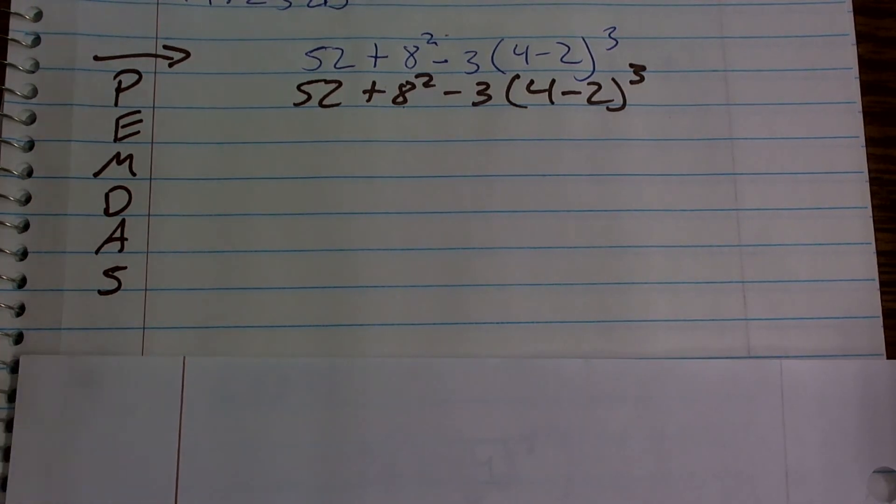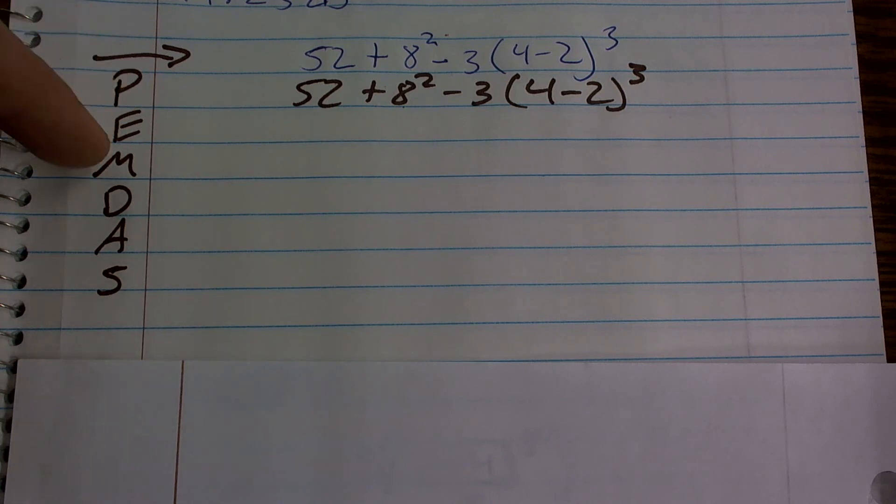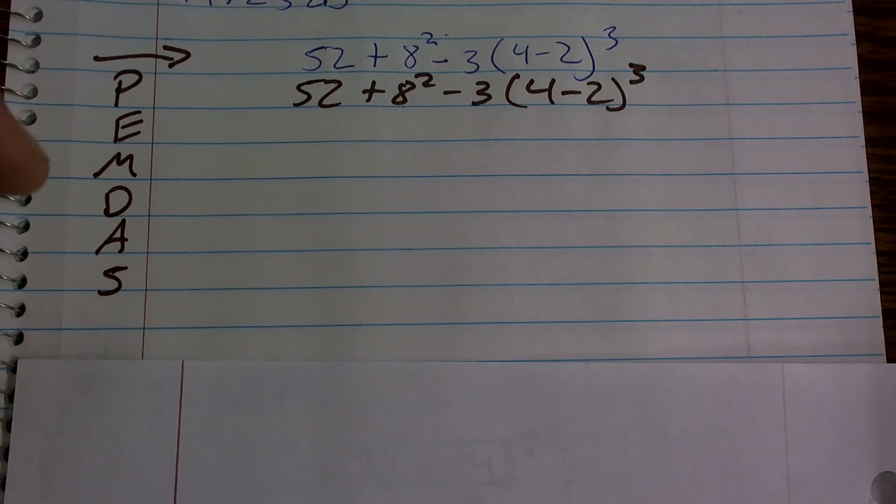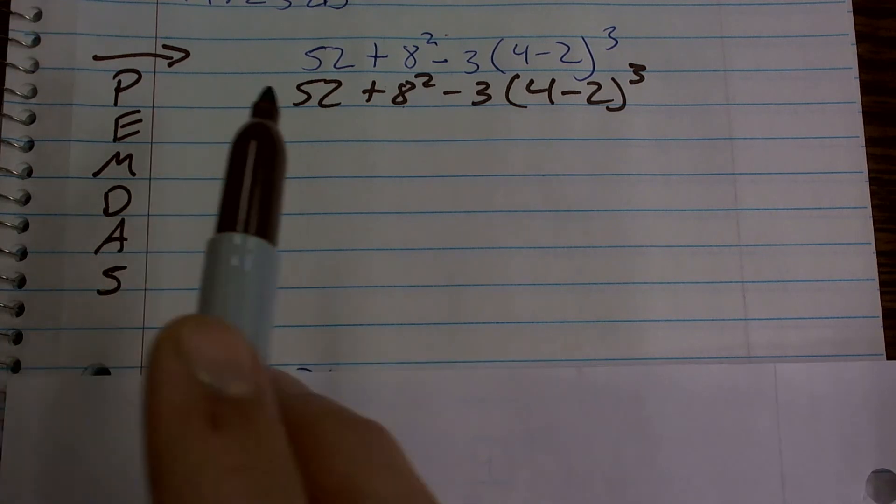So the first thing, and this is parentheses or grouping symbols, which would be G, but let's just do parentheses or grouping symbols, exponents or powers, multiplication and division from left to right, addition and subtraction from left to right. That's why I put the arrow to remind me to go left and right.